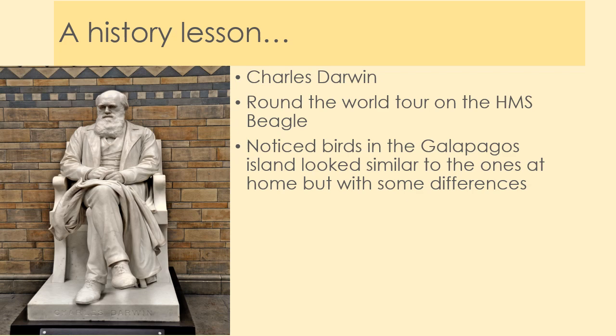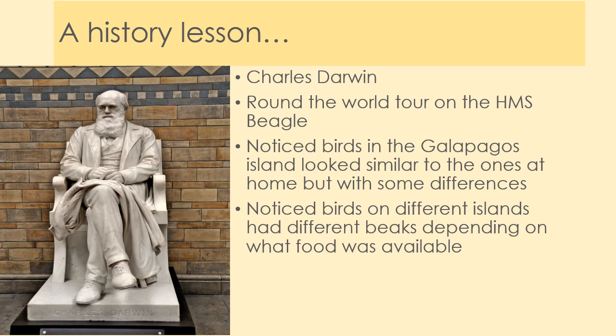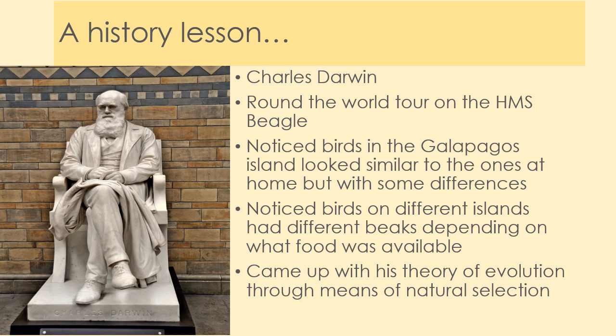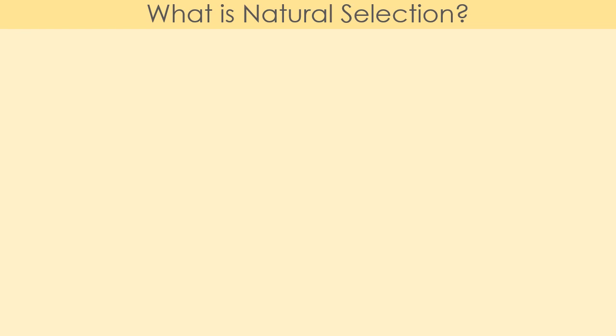Darwin noticed that on the Galapagos Islands, the birds — a mixture of finches — had different beaks depending on what food was available. They were all finches but looked very different: different beaks, different colors. He was confused, started thinking about it, and worked on his magnus opus, eventually coming up with the theory of evolution through natural selection and survival of the fittest.